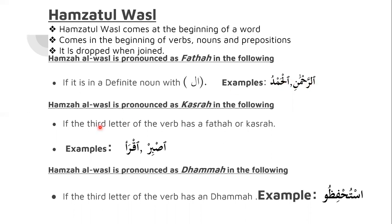You can watch a separate video on Qumariya and Shamsiya, or the rules of Lam Sakinah. Hamzatul Wasal is pronounced as a Kasra in the following cases. If you have Hamzatul Wasal at the beginning of a word, it usually doesn't have a vowel on it, and sometimes it won't come as a definite article with Al.